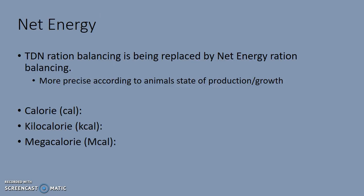Talking more about the net energy system: there are two different types of ration balancing. The old way is TDN — that's being replaced by net energy, which is more precise and more in line with the animal's state of production and growth. If you have any interest in nutrition, or if you have a nutritionist working with your ranch or dairy, typically they're going to be using the net energy system.